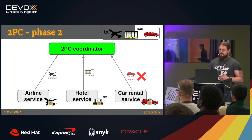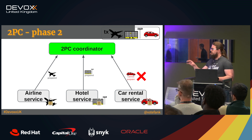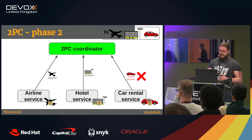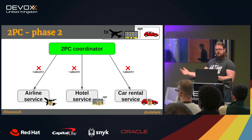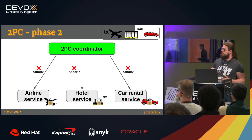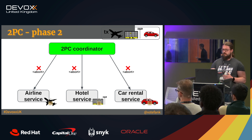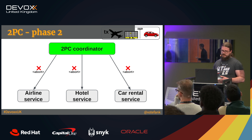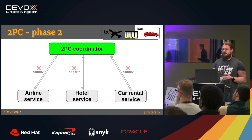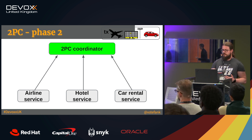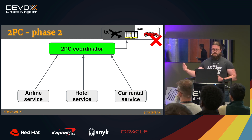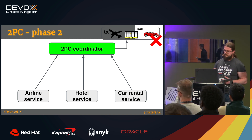If some resources cannot be fulfilled — for example, we are out of cars — the coordinator sends an abort message to all individual resources. We remove the logs, release the resources that were allocated, and send back a confirmation that everything was aborted so the transaction can be restarted.